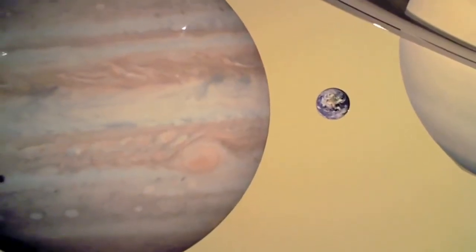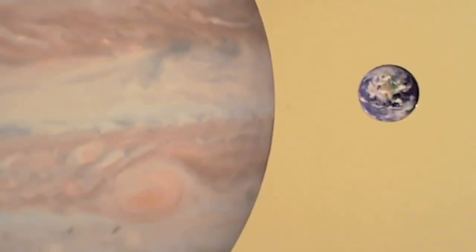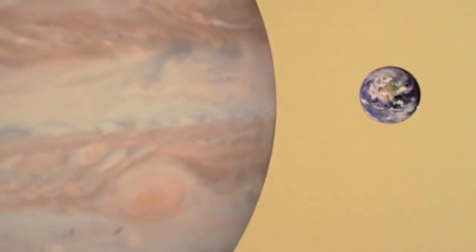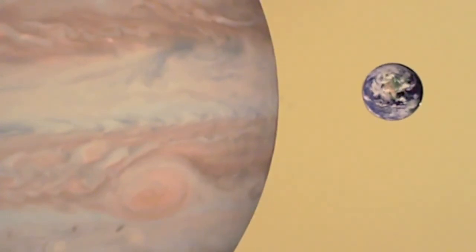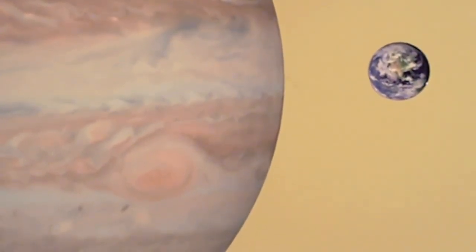One thing especially to note is the Great Red Spot on Jupiter, which is an enormous storm that's been going for as long as we've been looking at Jupiter - over 300 years. It's a storm that's bigger than the entire Earth. Pretty amazing.